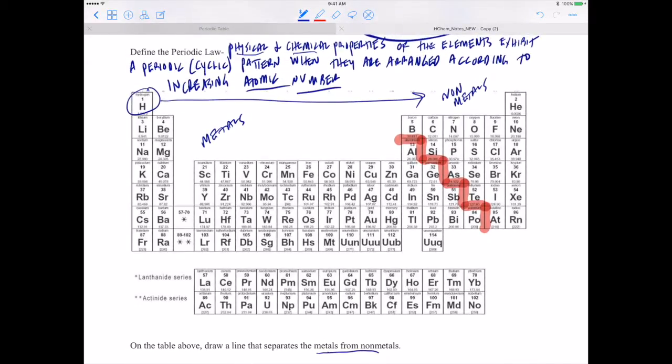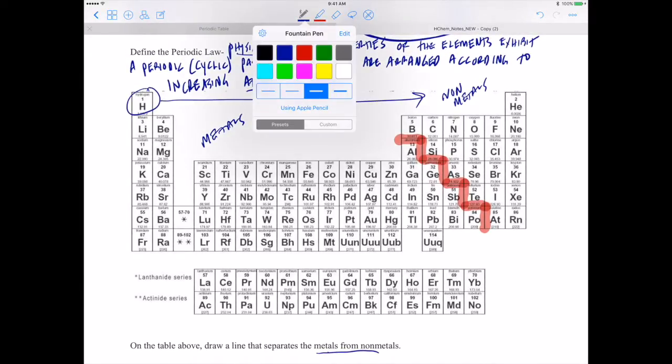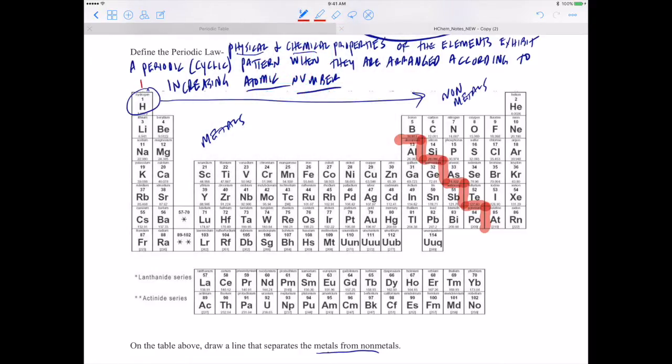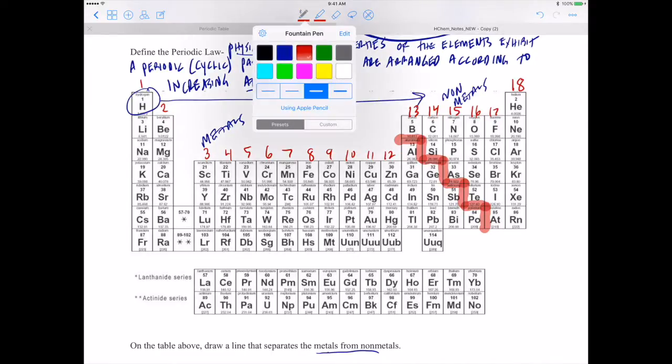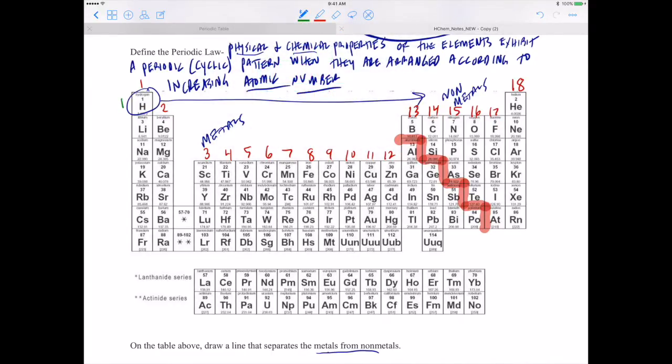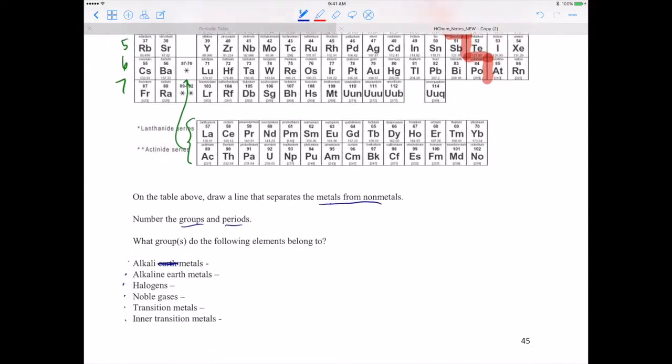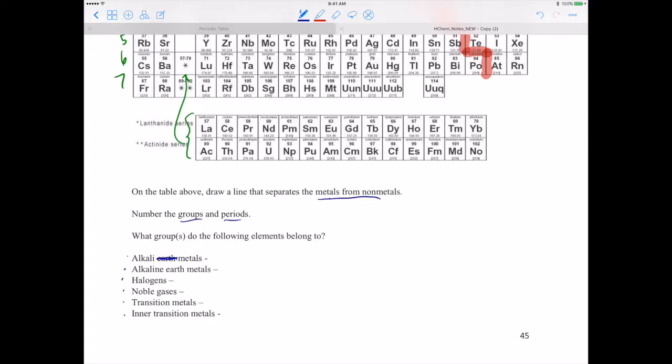Alright, did you number the groups and the periods? Alright, let's go ahead and number the groups. This is group 1, then 2, and then 3, 4, 5, 6, 7, 8, 9, 10, 11, 12, group 13, 14, 15, 16, 17, and 18. Those are our groups. And our periods, let's go ahead and number those in green. We have period 1, 2, 3, 4, 5, 6, 7. Remember, these two belong in our period 6 and 7. Okay, alright, good.